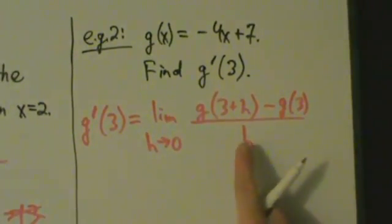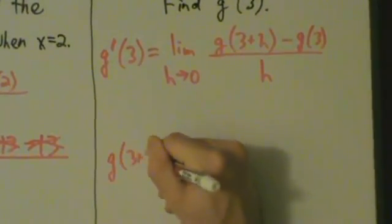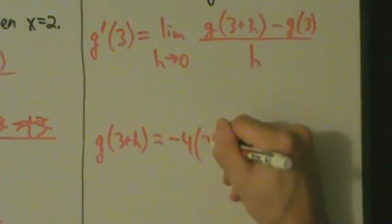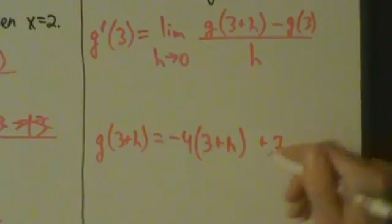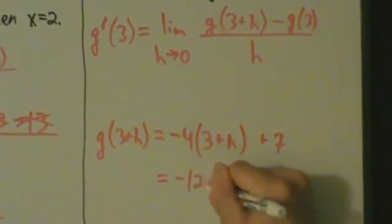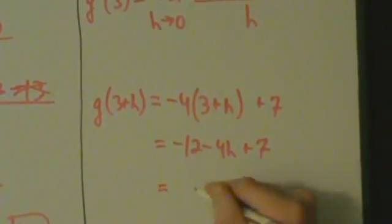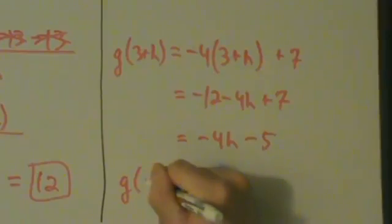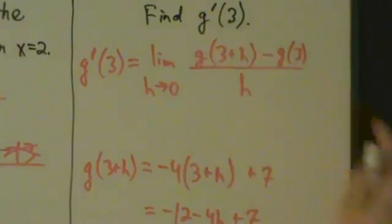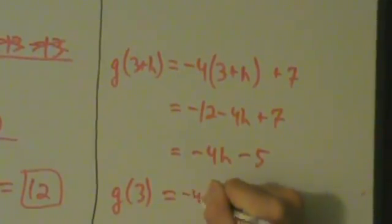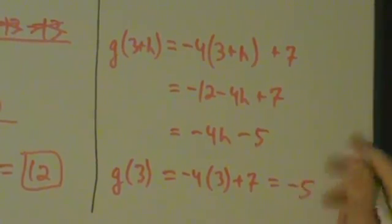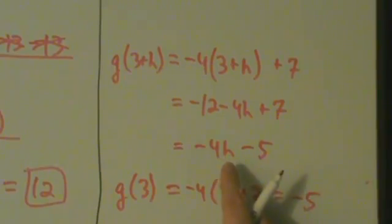We need to find g of 3 plus h and g of 3. Since g of x is negative 4x plus 7, g of 3 plus h is negative 4 times (3 plus h) plus 7. Distributing: negative 12 minus 4h plus 7, which simplifies to negative 4h minus 5. And g of 3 is negative 4 times 3 plus 7, which is negative 12 plus 7, equals negative 5.